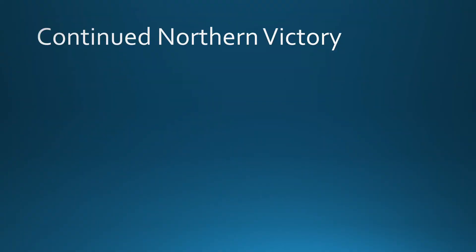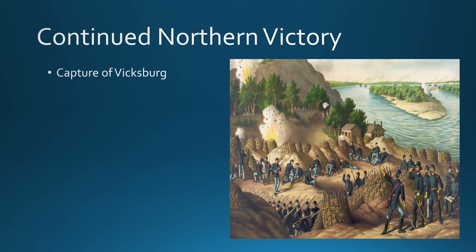After Gettysburg, things start to really shift for the Union. Vicksburg is successfully captured by the Union. Its location right on the Mississippi River means that by taking it over, the Confederate war effort is basically divided. They've lost that major corridor for transporting supplies and troops, cutting the Confederacy roughly in half — a pretty big deal for the Union.